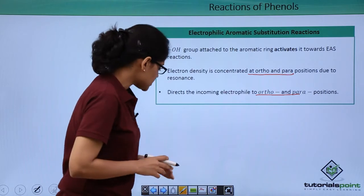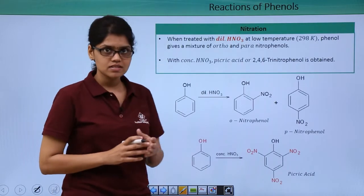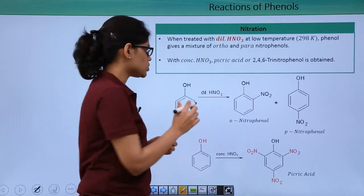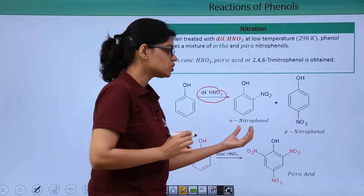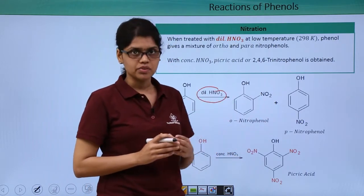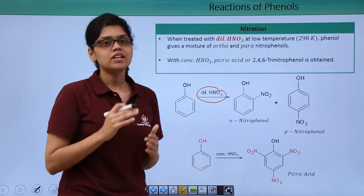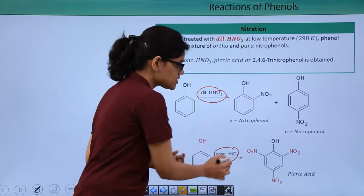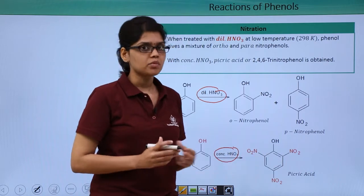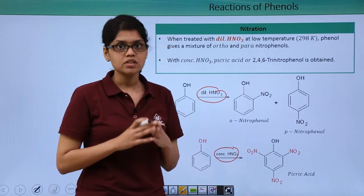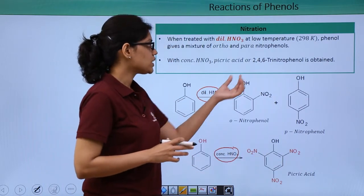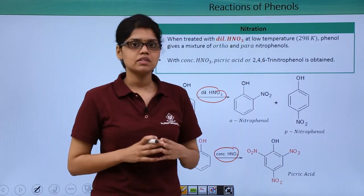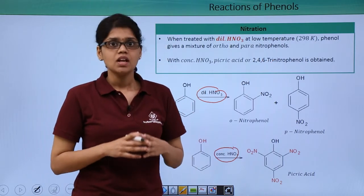Let's look at the first reaction, which is nitration. When phenol is treated with dilute HNO3, you get a mixture of ortho-nitrophenol and para-nitrophenol. Whereas when it is reacted with concentrated HNO3, both ortho and para positions get substituted such that we end up getting 2,4,6-trinitrophenol, otherwise called picric acid.